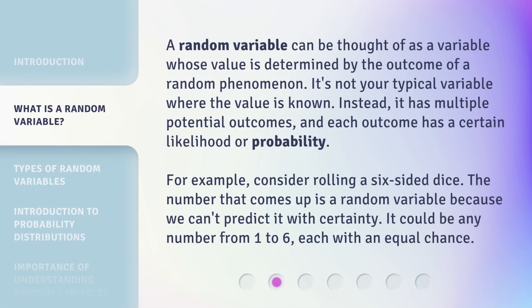A random variable can be thought of as a variable whose value is determined by the outcome of a random phenomenon. It's not your typical variable where the value is known. Instead, it has multiple potential outcomes, and each outcome has a certain likelihood or probability. For example, consider rolling a six-sided dice. The number that comes up is a random variable because we can't predict it with certainty. It could be any number from one to six, each with an equal chance.